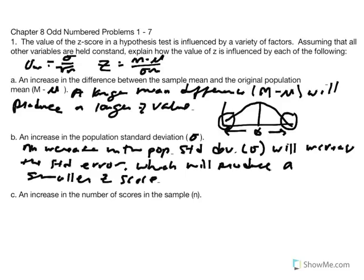Mathematically, considering our standard error equation — standard deviation divided by the square root of n — if the numerator increases and everything else stays constant, we will have a larger quotient, in this case the standard error. And if we have a larger standard error in our z equation — if we're dividing by a larger number — the denominator increases, and our z-score is going to decrease.